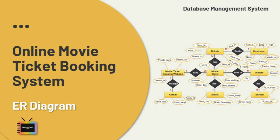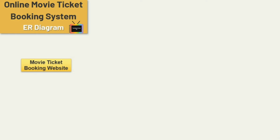Hi everyone, welcome back to TechnoTech TV. In this tutorial I will show you how to draw an ER diagram for an online movie ticket booking system. If you don't know what an ER diagram is and what its components are, I have added a video link in the upper right corner of your screen — watch that first. The entity relationship diagram of an online movie ticket booking system graphically represents database tables and relationships between movie, customer, theater, screen, etc. The main entities are: movie ticket booking website, admin, movie show, movie tickets, theater, screen, and customer.